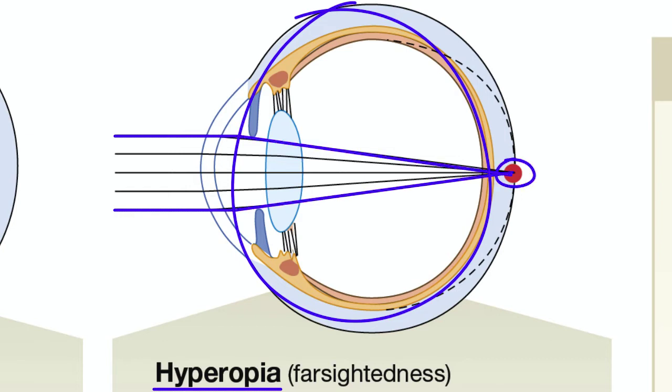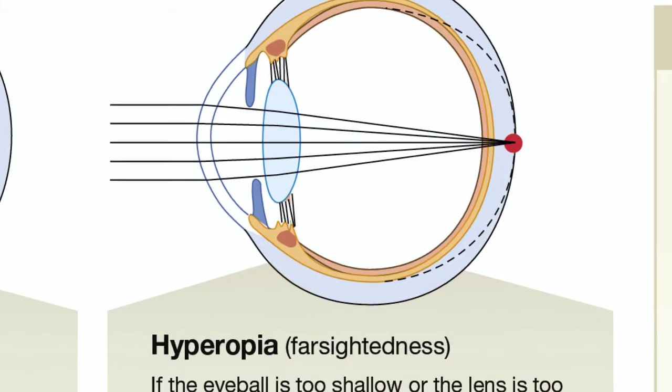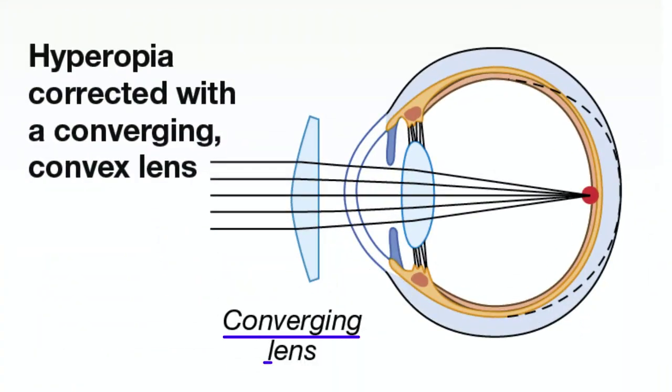So again, the light striking the retina is not focused and the image is blurry. A converging lens can correct for farsightedness.